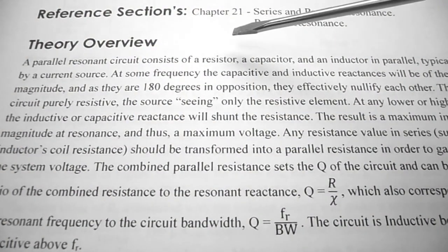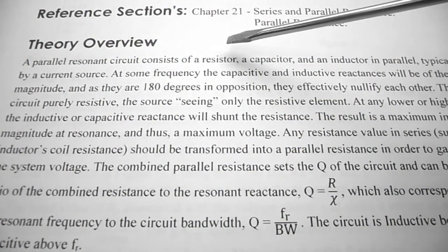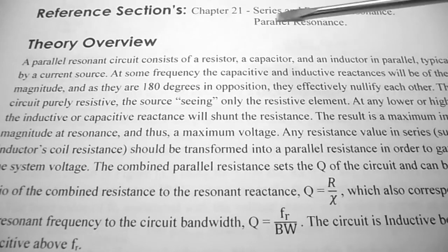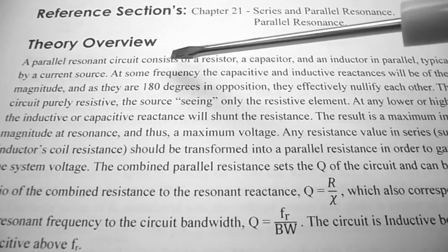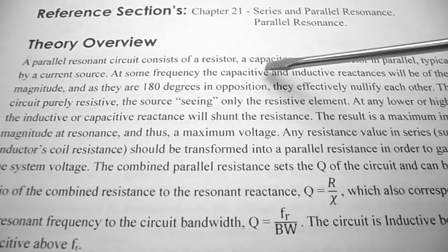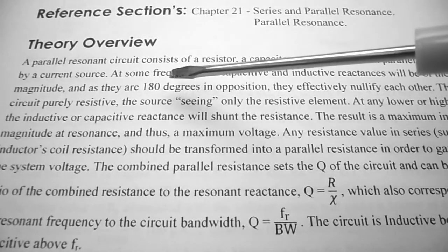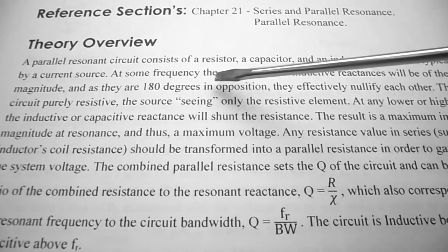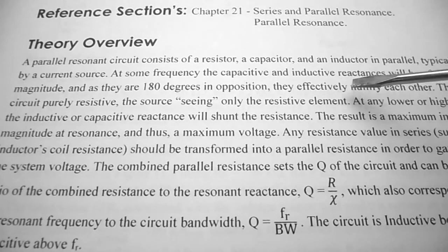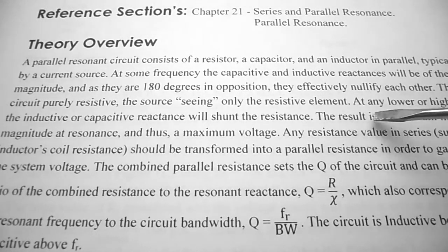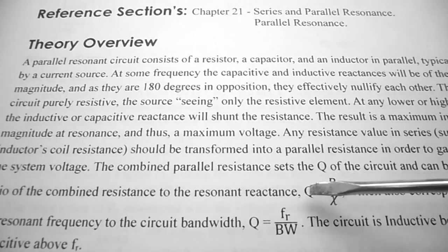In the theory overview, a parallel resonance circuit consists of a resistor, a capacitor, and an inductor in parallel, typically driven by a current source. At some frequency, the capacitive and inductive reactances will be of the same magnitude. As they are 180 degrees in opposition, they will effectively nullify each other, leaving the circuit purely resistive — the source seeing only the resistive element. A couple of formulas are provided.